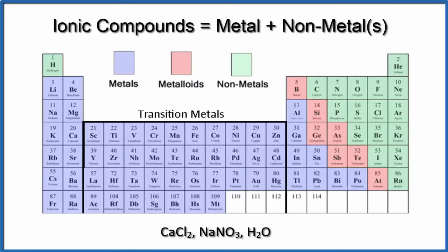For CaCl2, calcium is a metal and chlorine is a nonmetal, so this is an ionic compound.